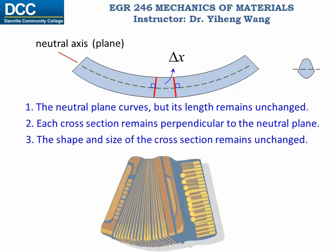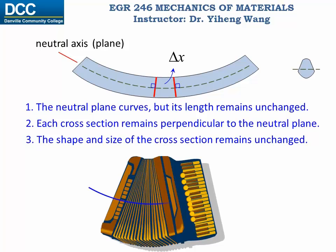Here is the neutral plane that curves up during deformation, and the cross-section rotates from its original location, however, it remains straight and perpendicular to the neutral plane.